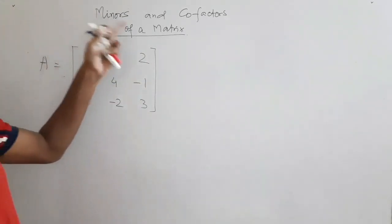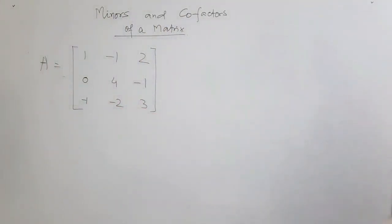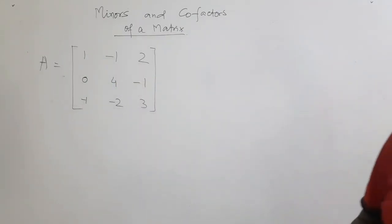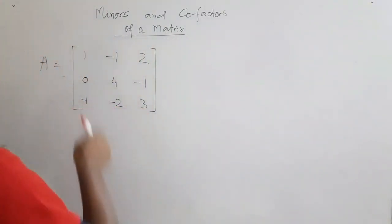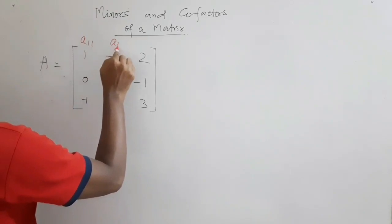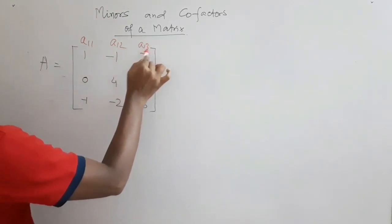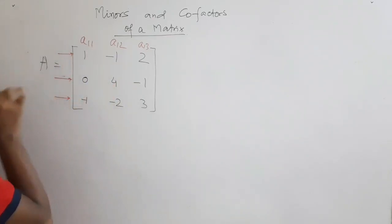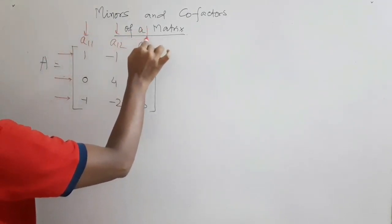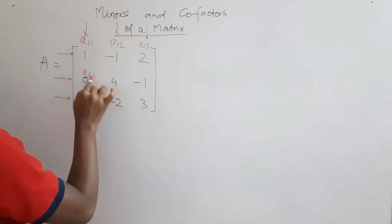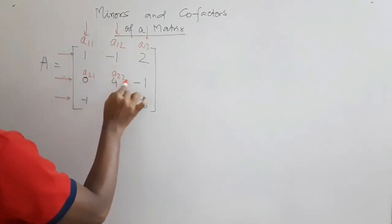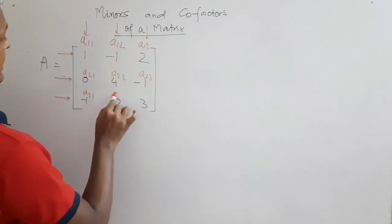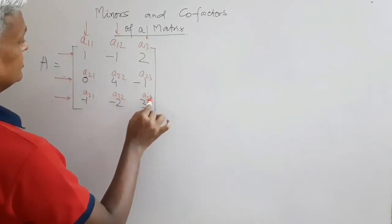We have to find the minors and cofactors of this matrix. The first element at first row, first column is A11. Then A12 is first row, second column; A13 is first row, third column. The second row gives A21, A22, A23, and the third row gives A31, A32, A33.